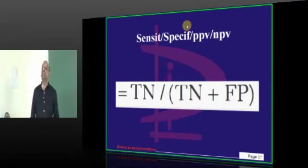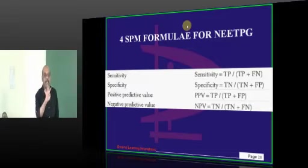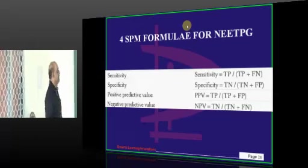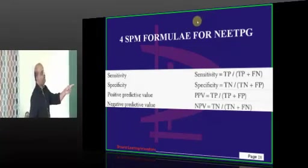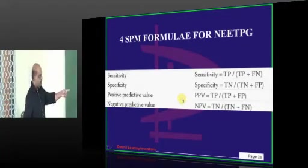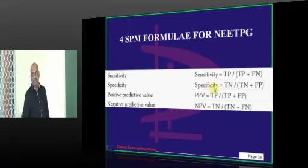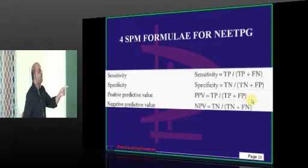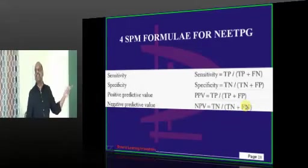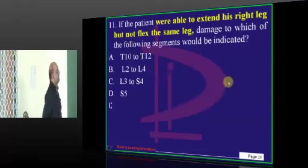To survive NEET PG, here are the four SPM formulae you should know. Sensitivity equals true positive divided by true positive plus false negative. True negative divided by true negative plus false positive is specificity. True positive divided by all positives is positive predictive value. True negative divided by all negatives is negative predictive value. This is what you need to basically remember.